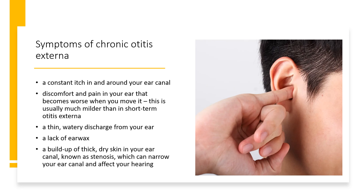Symptoms of chronic otitis externa can include: a constant itch in and around your ear canal; discomfort and pain in your ear that becomes worse when you move it — this is usually much milder than in short-term otitis externa; a thin, watery discharge from your ear; a lack of earwax; and a buildup of thick, dry skin in your ear canal, known as stenosis, which can narrow your ear canal and affect your hearing.